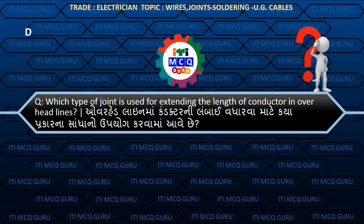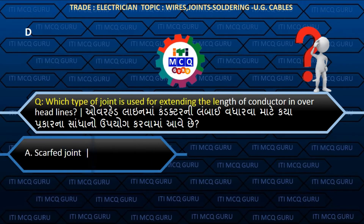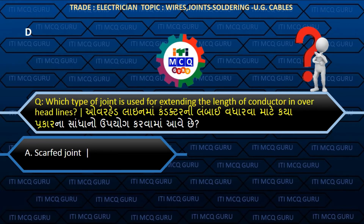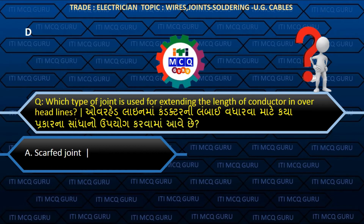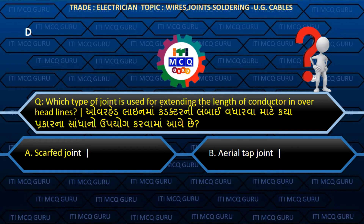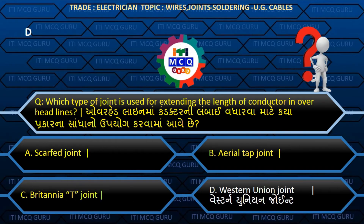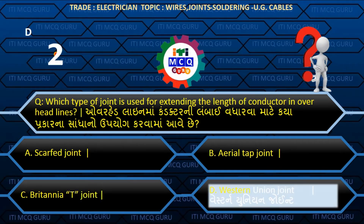Which type of joint is used for extending the length of a conductor in overhead lines? (Overhead line maa conductor ni lambai vadharwa maate kyaa prakar na joint noo uphyog karwaa maa aave chhe?) Answer D: Western union joint.